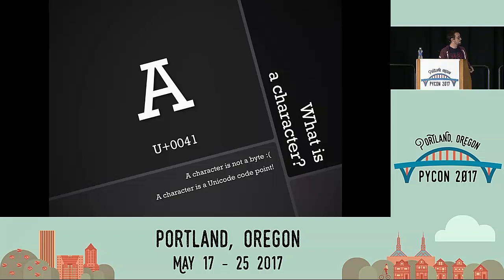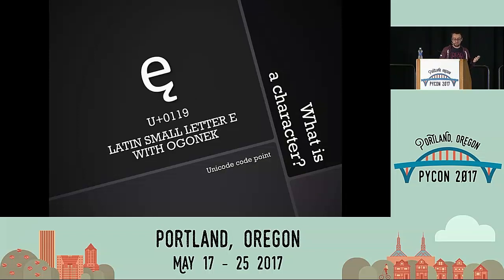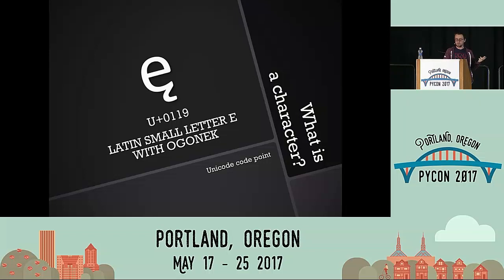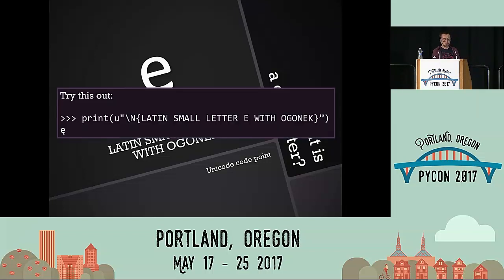These characters are abstract concepts — just a number in a long list of possible characters, sometimes with a name. That is a character. For example, a strange Polish diacritical character is called 'Latin small letter E with ogonek.' The fun thing is that in Python you can actually use the long name directly, and it will work.